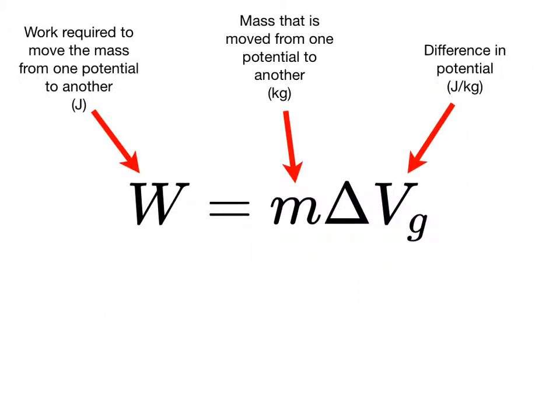This equation allows us to calculate the work that will be needed to move a mass from one potential to another. If the mass is moved from a lower potential to a higher potential, which is against the direction that it wants to move, then the work will be positive.